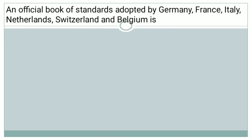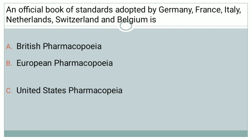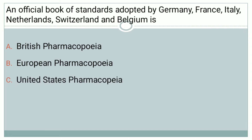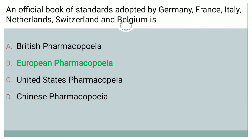The next question: An official book of standards adopted by Germany, France, Italy, Netherlands, Switzerland and Belgium is — Option A: British Pharmacopeia, Option B: European Pharmacopeia, Option C: United States Pharmacopeia, Option D: Chinese Pharmacopeia. The right answer is Option B, that is European Pharmacopeia.